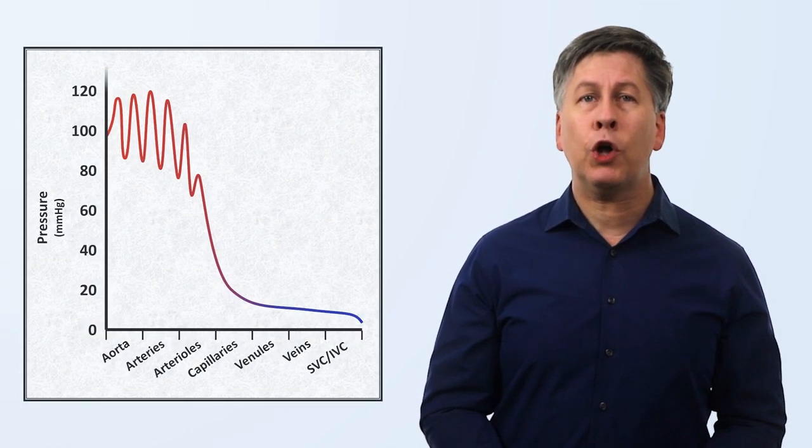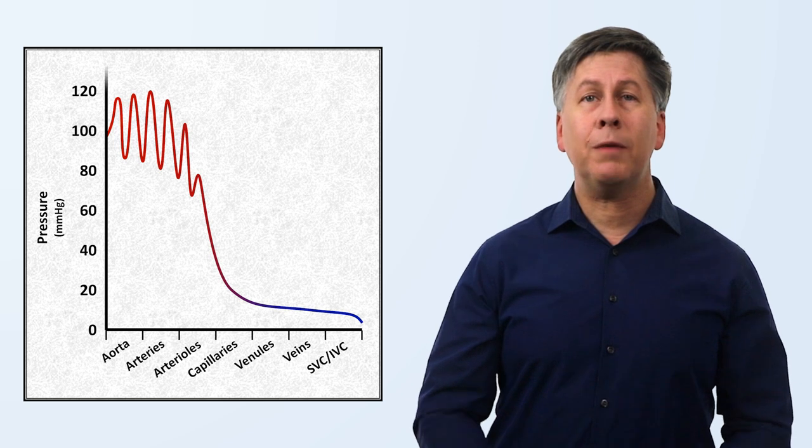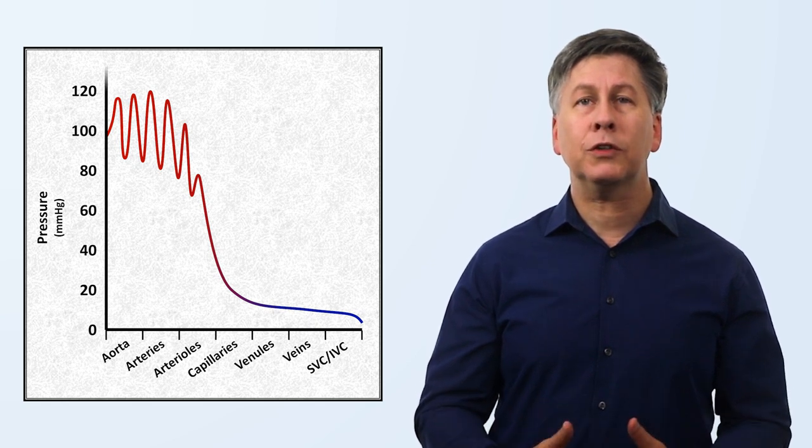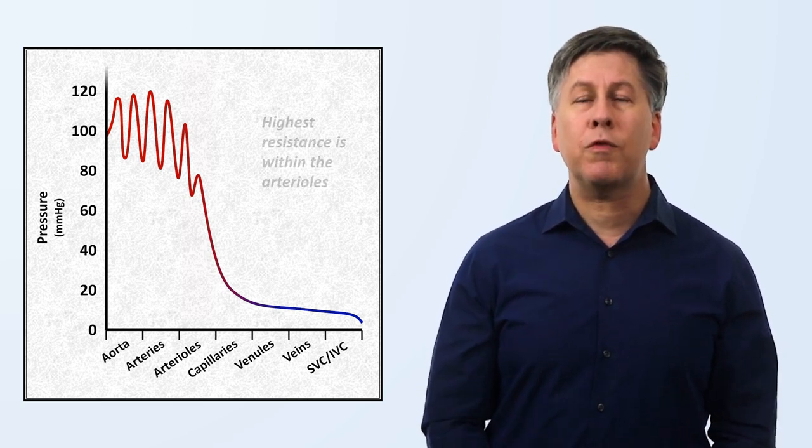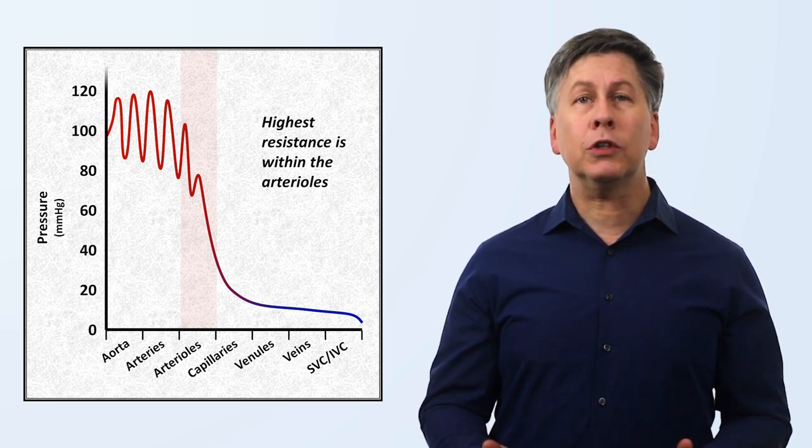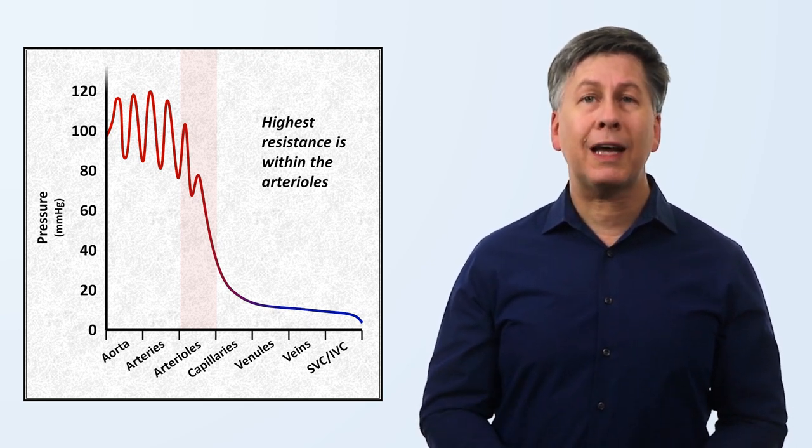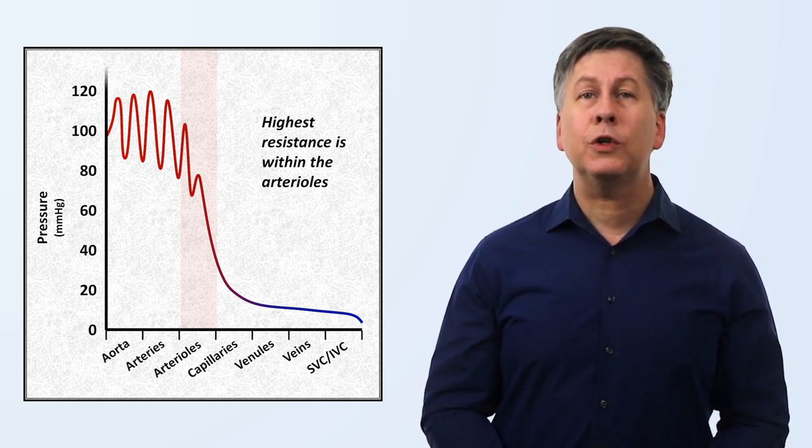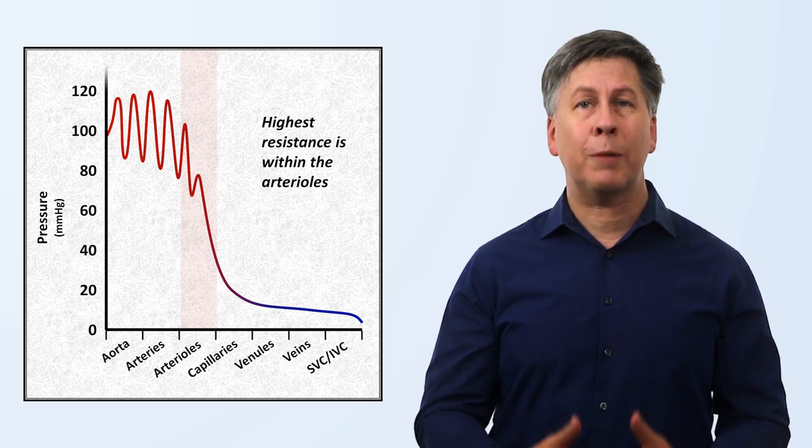There are a few other points to make about resistance here. If we graph pressure along the circulation path, we can note a few things. First, the pulsatile nature of blood flow gets attenuated as the vessels become smaller, resulting in flow being smooth by the time it reaches the smaller arterioles and vessels distal to them. But also, there is a steep drop-off in the pressure as blood passes through the arterioles. This means that the arterioles are the site of the greatest resistance to blood flow. This is an important component of both the systemic and local regulation of blood flow. Arterioles have muscular walls that can constrict or dilate to significantly alter vascular resistance to specific capillary beds in response to a variety of local and systemic signals.